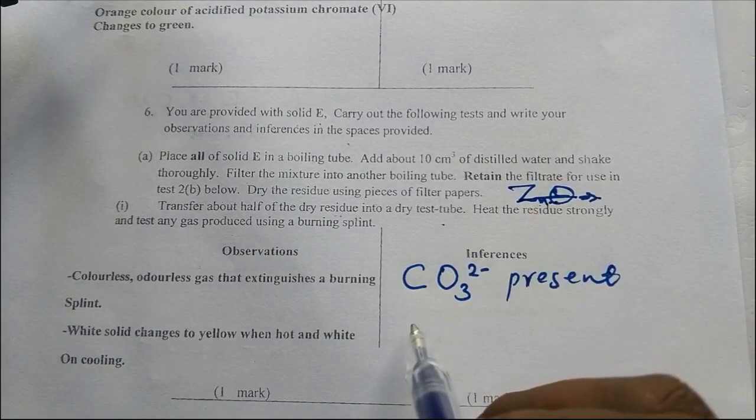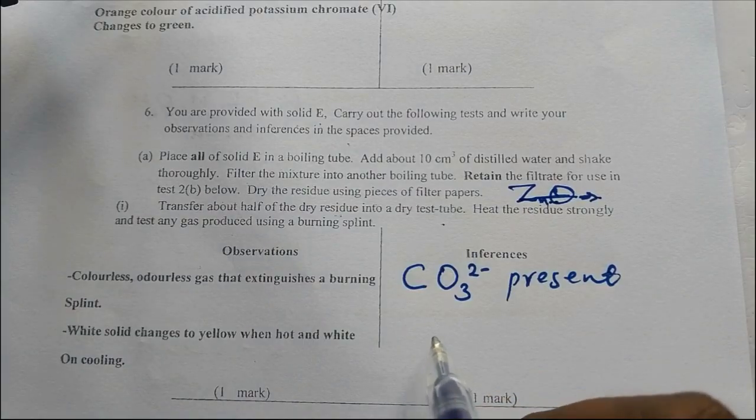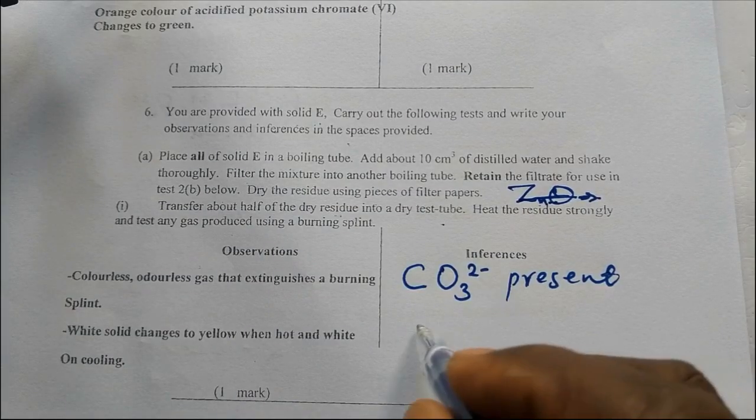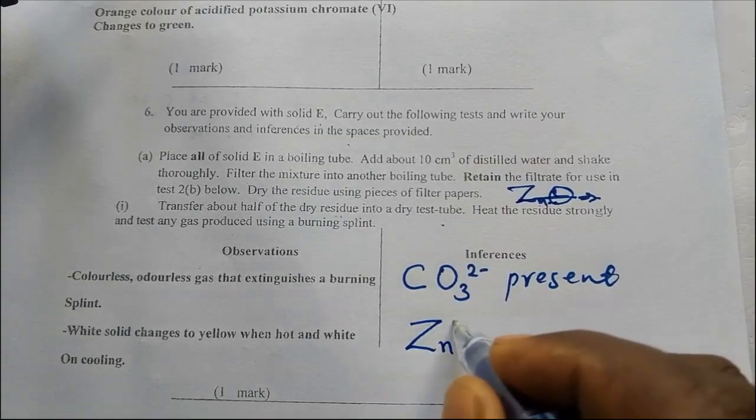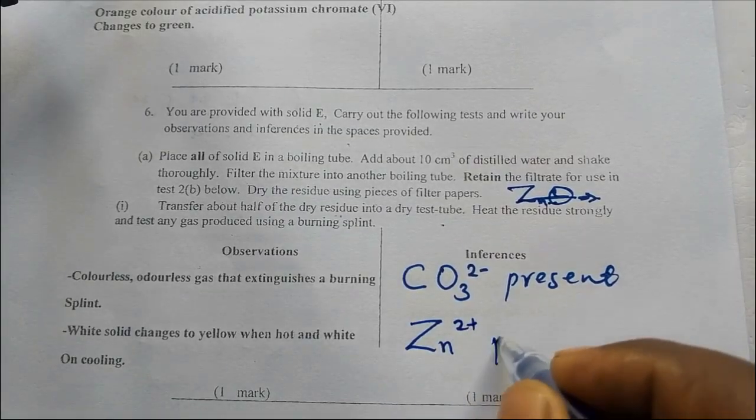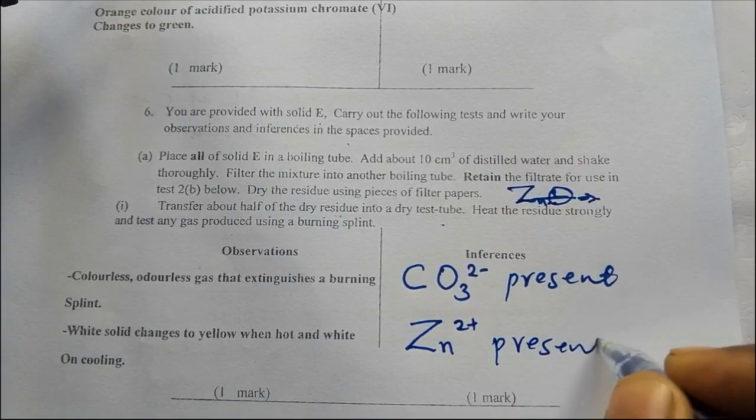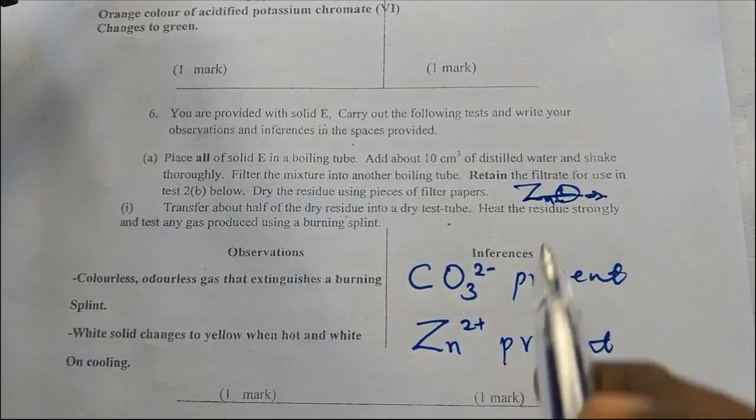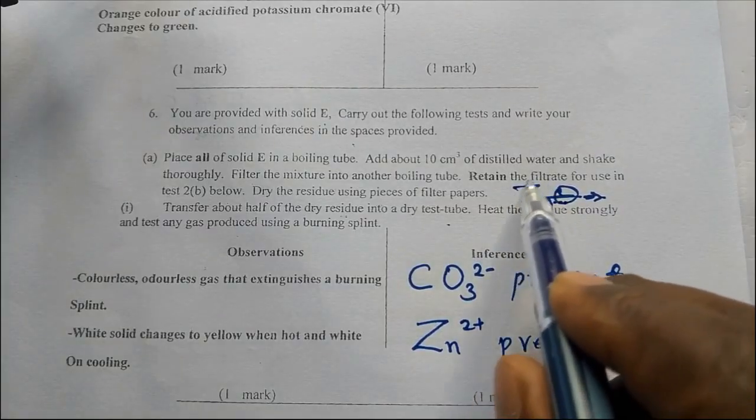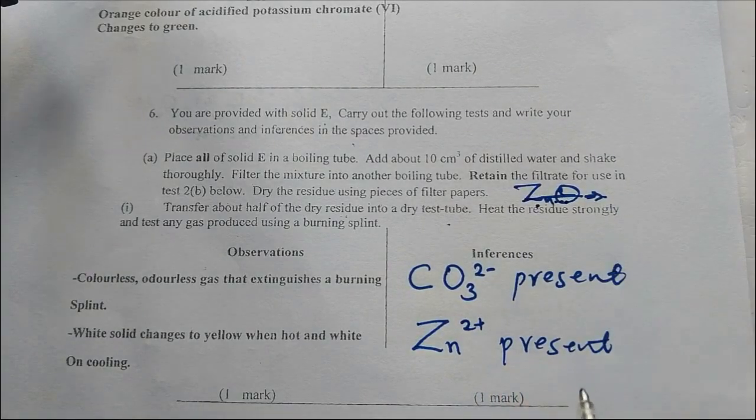If it is zinc oxide, you don't write zinc oxide here. We are talking about cations and anions. Therefore it means it is Zn²⁺ ions that are present. Because it is zinc oxide, therefore we are interested with the ions of zinc.